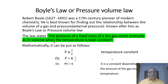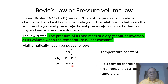Mathematically, this law is expressed as P ∝ 1/V. Removing the sign of proportionality, we have P = K × (1/V), where temperature is constant. Transposing V to the other side, we have PV = K, where K is a constant depending on the amount of gas and its temperature.